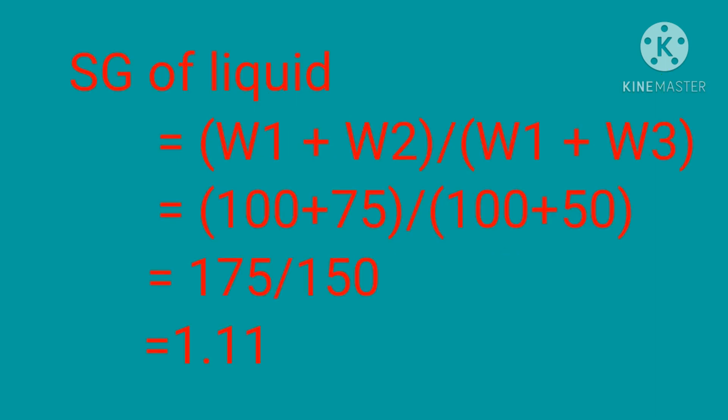We have the simple formula to calculate the relative density, or specific gravity, of the liquid: (W1 + W2) divided by (W1 + W3). By substituting the values, we get the specific gravity of the liquid as 1.11.